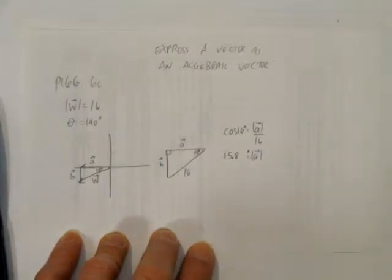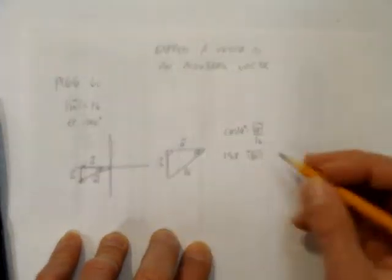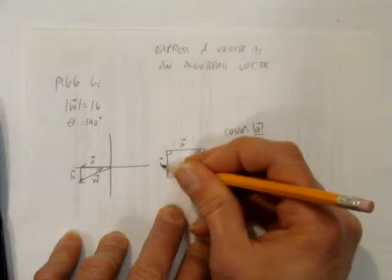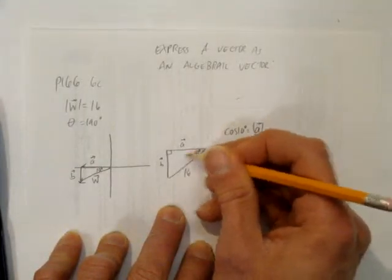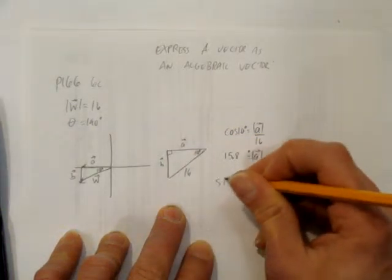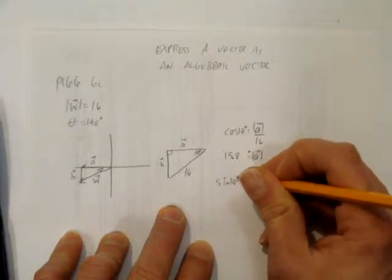And then we want to do the same thing for vector b since it's opposite 10 degrees. And we're working still with hypotenuse. That's opposite hypotenuse. We're going to do the sine of 10 degrees, which is opposite.